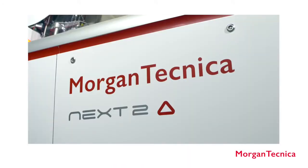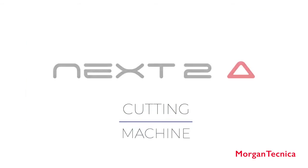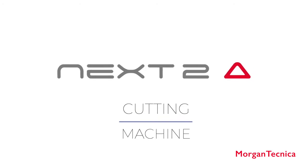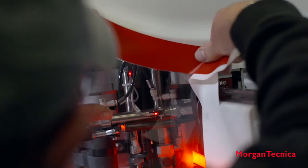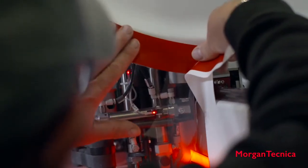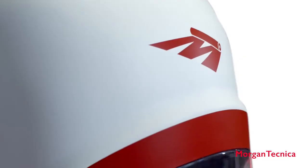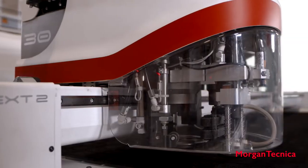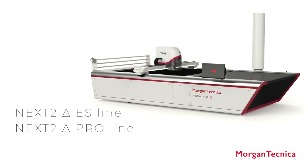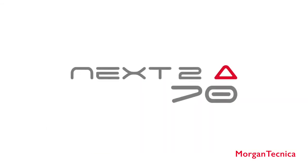Morgan Technica Next 2 Delta is the latest generation of high-ply cutting machines. The Delta series is the best designed and developed for all cutting room production needs, from clothing to furnishings, from automotive to accessories. Next 2 Delta is available in different versions to meet all market demands.